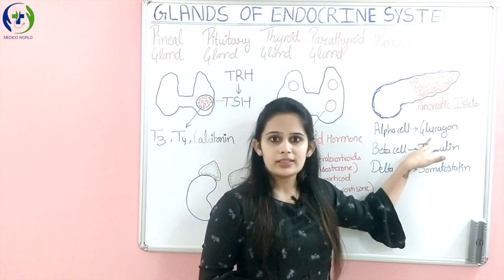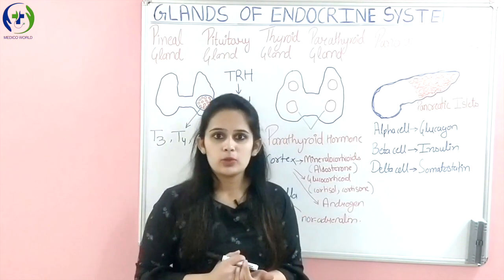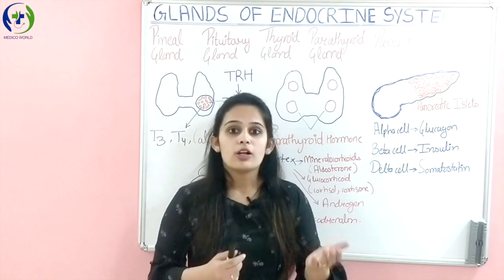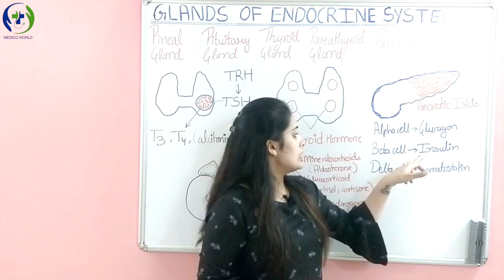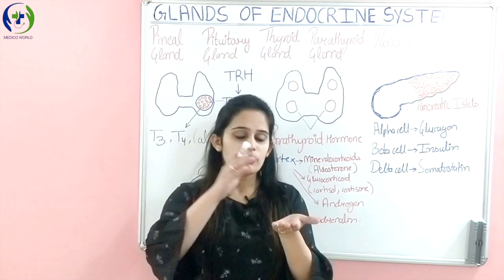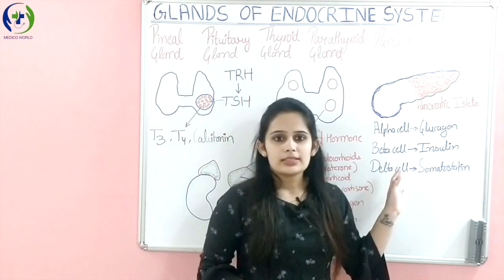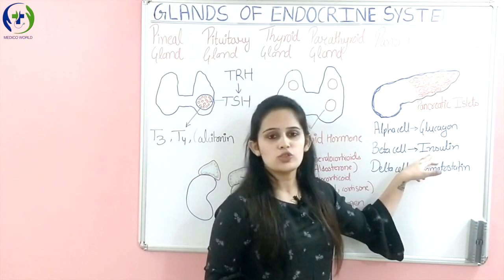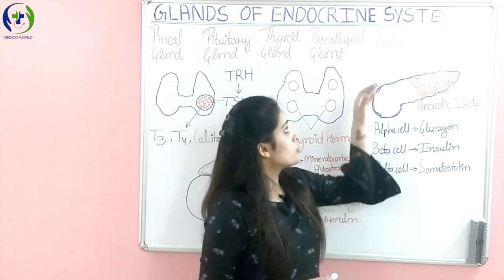Alpha cells release glucagon. When the blood glucose level falls, glucagon goes to the liver and converts glycogen into glucose, thereby raising the blood glucose level. The next cell is the beta cell, which releases insulin. When the blood glucose level rises, insulin directs glucose towards the cells, lowering blood glucose. The delta cell secretes somatostatin, which inhibits both glucagon and insulin. So this is how all three hormones regulate blood sugar level.